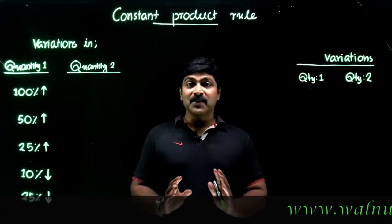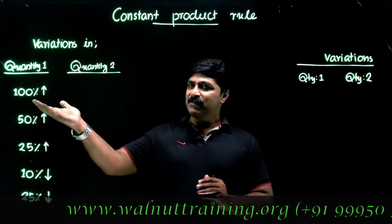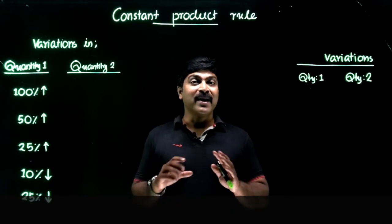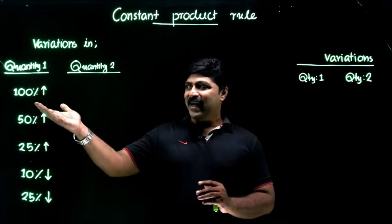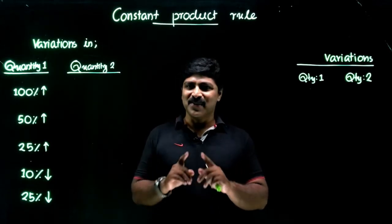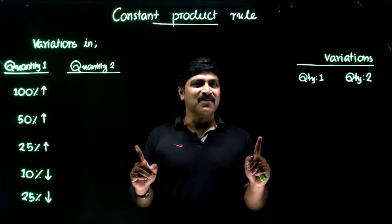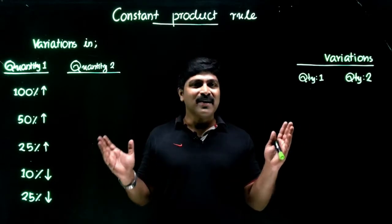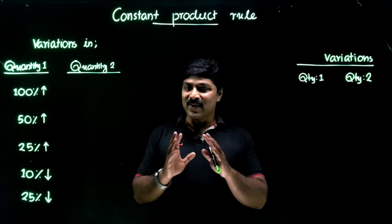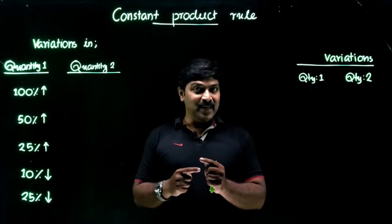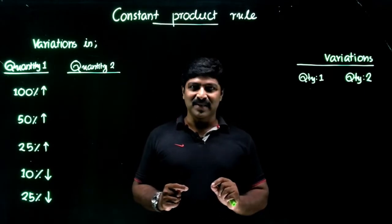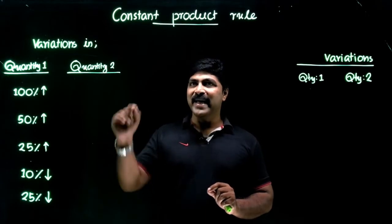Let's consider a simple example: if we are increasing the speed by 100 percent, what percentage of time can we save while covering a constant distance? This is very simple — increasing the speed by 100 percent means we are doubling the speed. When we double the speed, the time consumption becomes half, meaning we save 50 percent. That is the actual concept behind the Constant Product Rule.